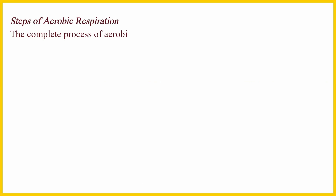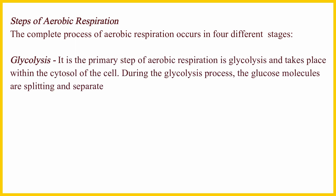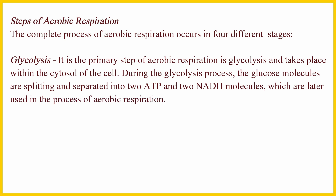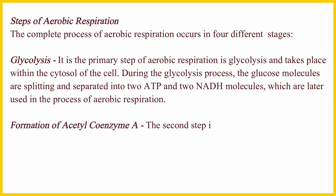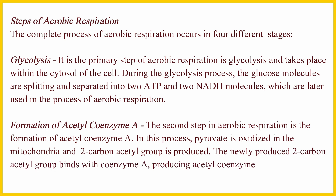The complete process of aerobic respiration occurs in four different stages. The first stage is glycolysis, which is the primary step of aerobic respiration and takes place within the cytosol of the cell. During glycolysis, the glucose molecules are split and separated into two ATP and two NAD molecules, which are later used in the process of aerobic respiration.